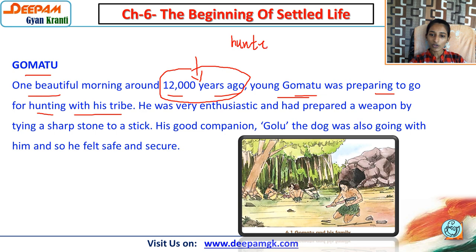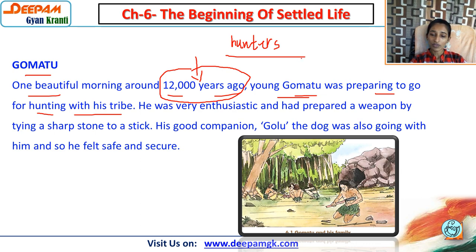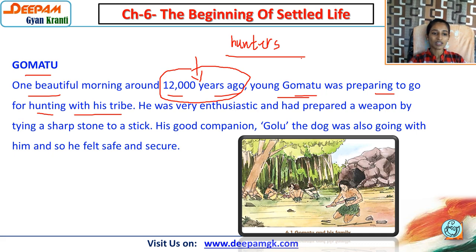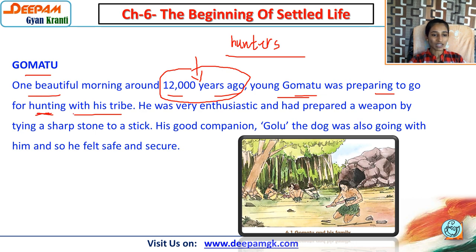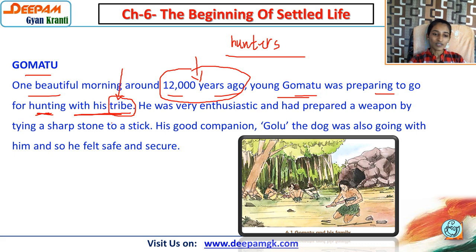Early humans used to hunt animals or eat birds, fruits, and flowers from trees. Gomatu was preparing for hunting with his tribe. Tribe means a group of people who belong to a jungle or backward area. He was very enthusiastic and had prepared a weapon by tying a sharp stone to a stick.